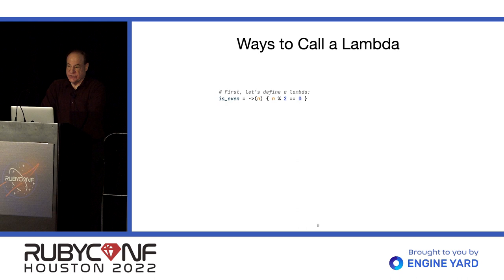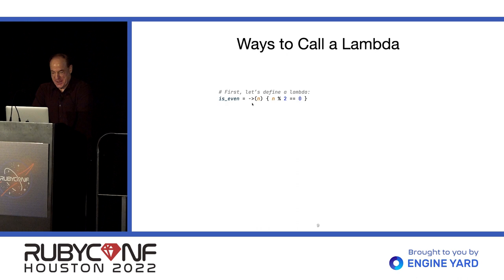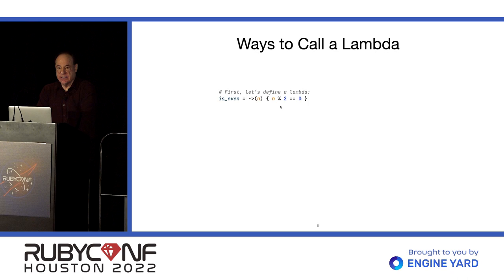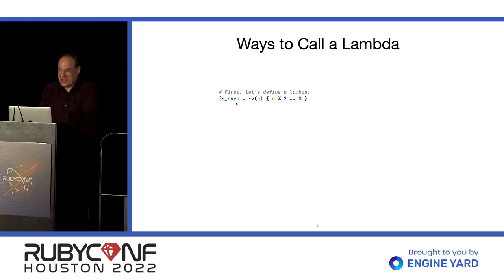Let's look at the ways to call a Lambda. First, let's define one. Here's a Lambda that takes a single parameter and returns whether or not it's a multiple of two — therefore, whether or not it's even. We're assigning it to a local variable called isEven. Unfortunately, you can't end a local variable name with a question mark. That would be nice, but you can't. So that's a thing you lose when you use Lambdas in local variables.